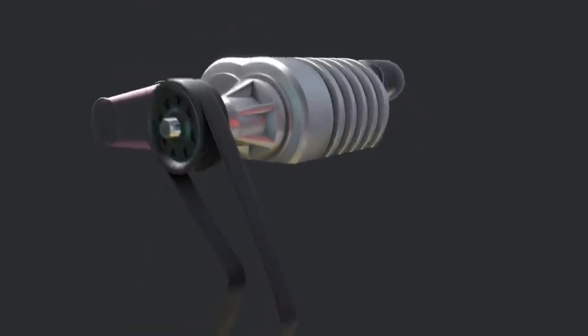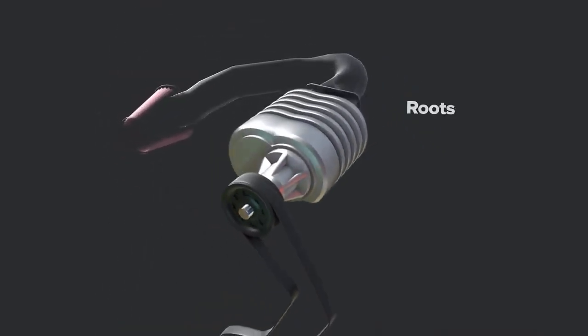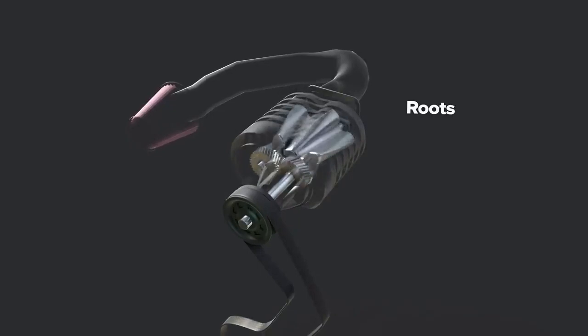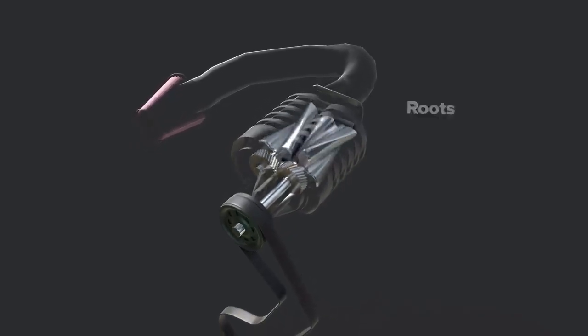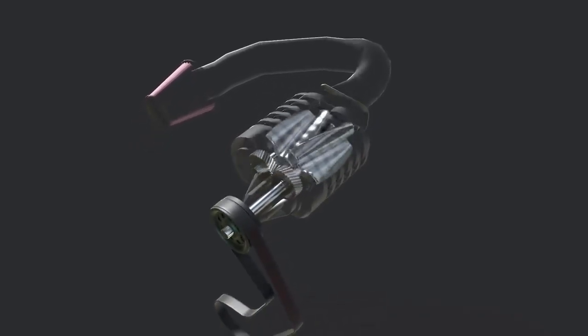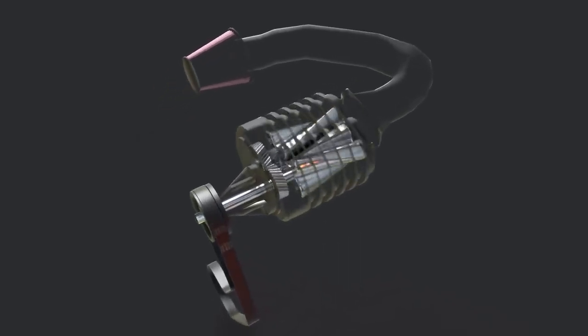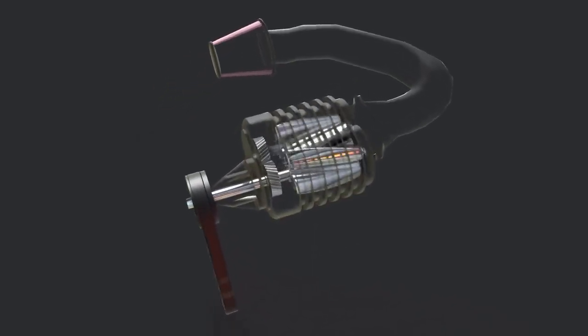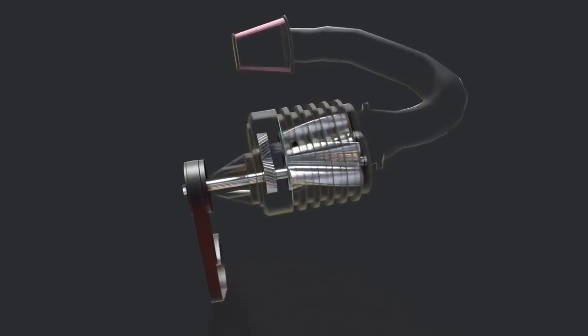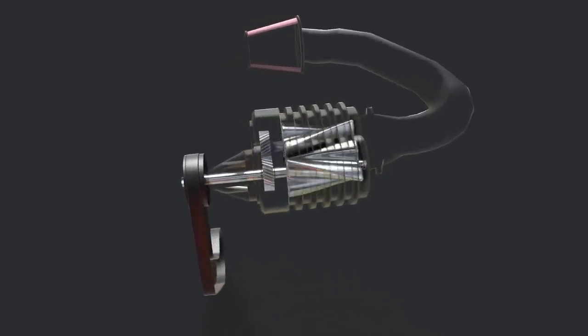Here are a few common supercharger types. Roots. The Roots type supercharger saw its first automobile application in 1900. The term blower or blown engine originates from the root supercharger's basic function as an air blower as opposed to other designs that compress air.